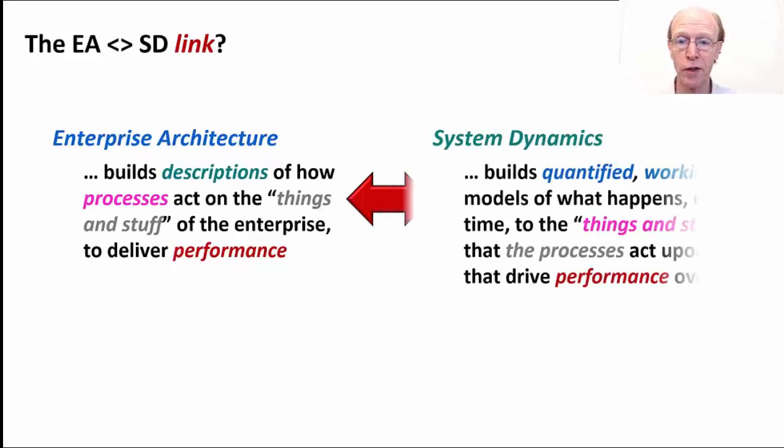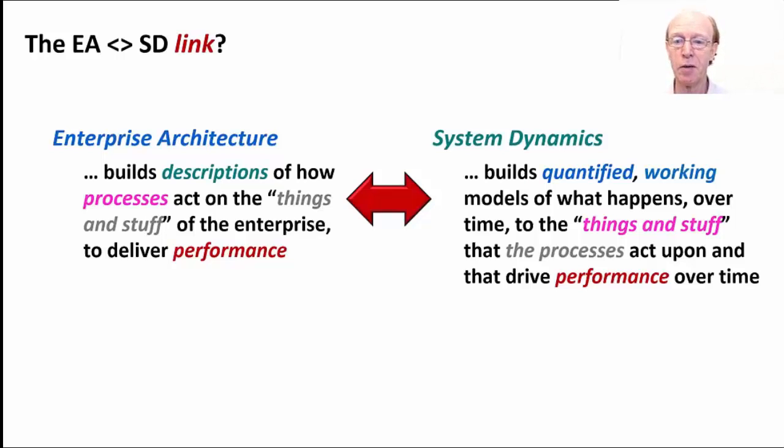In contrast, what system dynamics does is it builds quantified working models of what happens over time to the things and the stuff themselves that are acted upon by the processes and ultimately result in the performance changes over time that we're interested in. So our models would actually focus on at what rate are people being hired, are people being promoted, at what rate are numbers of staff changing at different levels of seniority, different departments in an organization, for example.